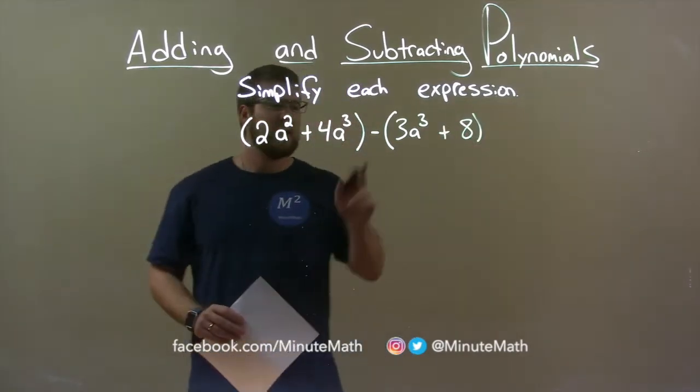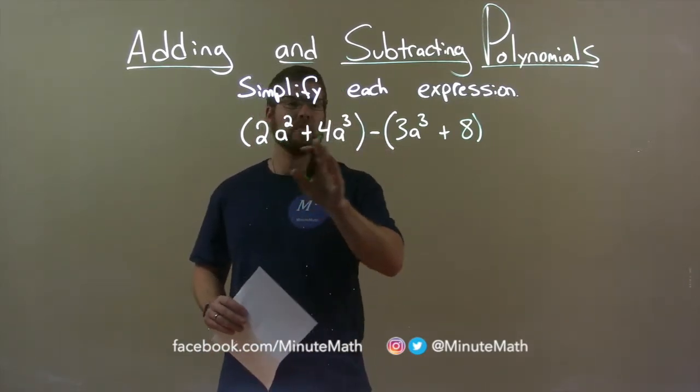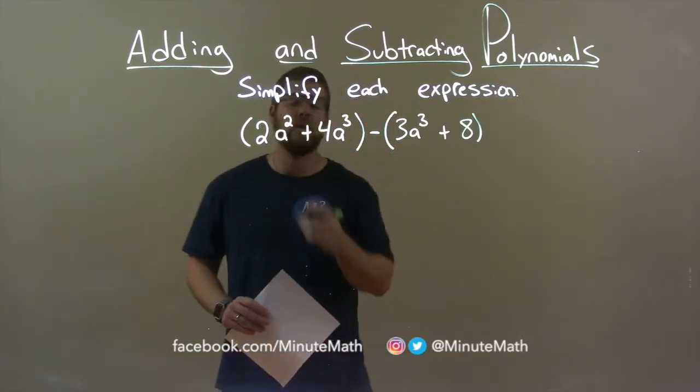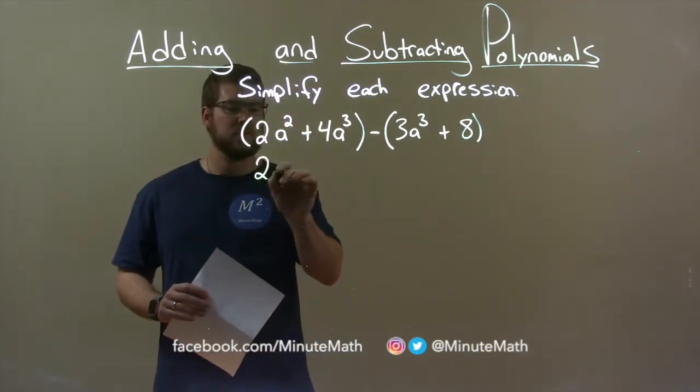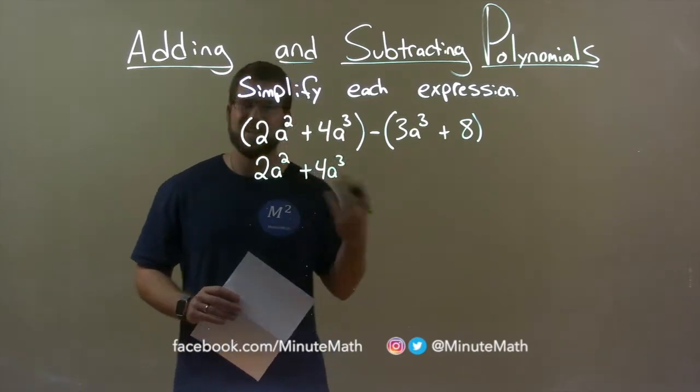Well, I see my subtraction sign here in between the two. I know I'm going to have to distribute. I always check to make sure that there's no like terms within each parenthesis that I can simplify, and there's not. So the left part here, 2a squared plus 4a to the third, we can just rewrite.